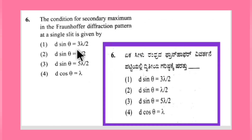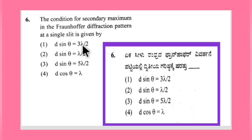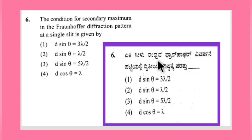Continuing with question number six: the condition for secondary maximum in the Fraunhofer diffraction pattern at a single slit is given by. This is a direct formula-based question about the condition for secondary maximum and minimum, so let us check out the formula and find the answer.